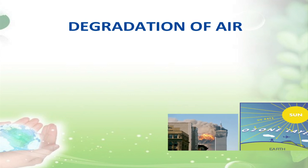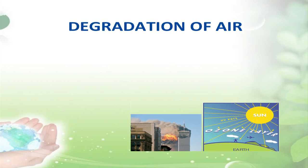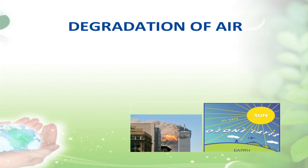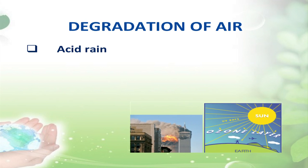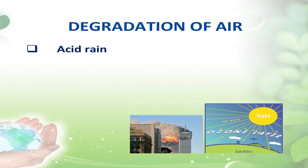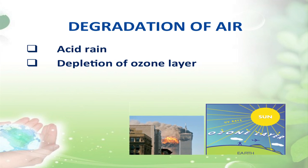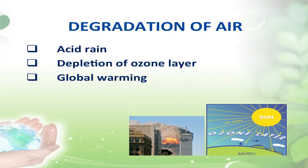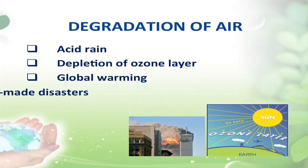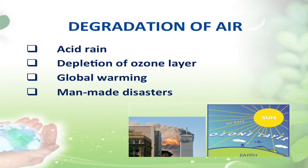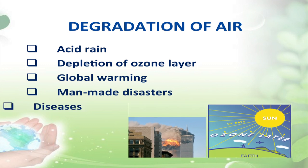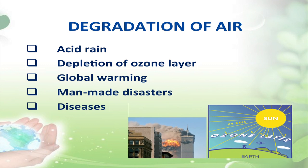Now we will discuss degradation of air. Degradation of air can happen due to acid rain, depletion of the ozone layer, global warming, man-made disasters, and of course, diseases.